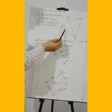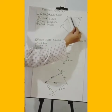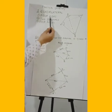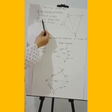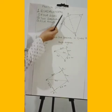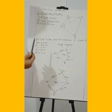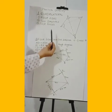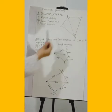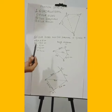A quadrilateral has 4 sides: AB, BC, CD, and AD. It also has 2 diagonals — diagonal AC and diagonal BD. And it has 4 angles: angle A, angle B, angle C, and angle D. These are said to be the dimensions of the quadrilateral.